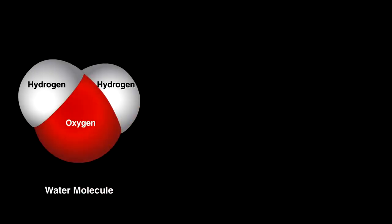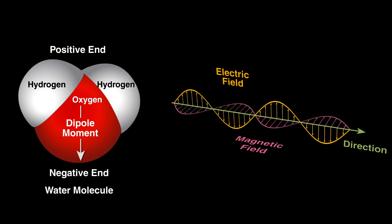Well, our food is filled with water, which is positively charged at one end and negative at the other. To give these molecules more energy, we expose it to electromagnetic waves that emanate from the tube.